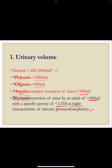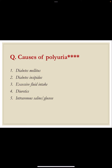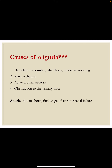Causes of increased urine output (polyuria) include: diabetes mellitus, diabetes insipidus, increased fluid intake, diuretics, and intravenous saline or glucose. Causes of oliguria include: decreased water intake leading to dehydration, vomiting, diarrhea, excessive sweating, renal ischemia, acute tubular necrosis, and obstruction to the urinary tract. Anuria is mostly due to shock and the final stage of chronic renal failure, where urine output decreases to less than 100 ml per 24 hours.